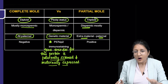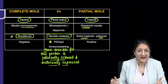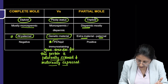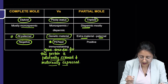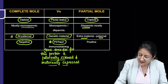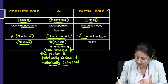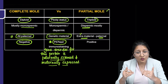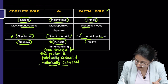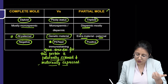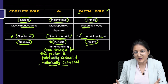In a complete mole, all the nuclear genetic material is paternal — there is no maternal nuclear DNA material. So this protein will not be synthesized, meaning P57 KIP2 immunostaining is going to be negative in a complete mole. Whereas in a partial mole, maternal genetic material is present, so this maternally expressed protein will be expressed and the immunostaining will be positive. A useful shortcut: P for partial mole, P for positive — P57 KIP2 immunostaining is positive in partial mole cases.